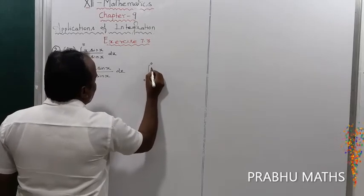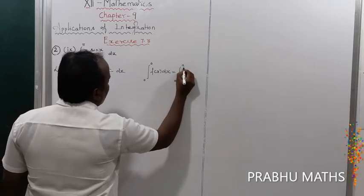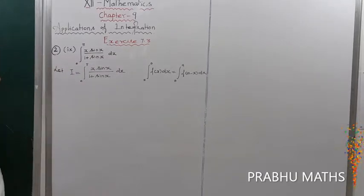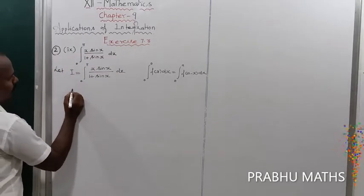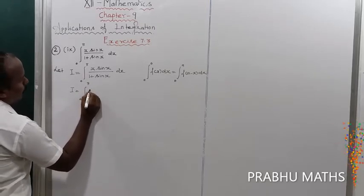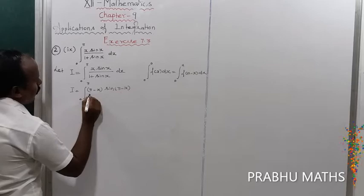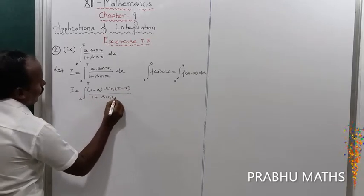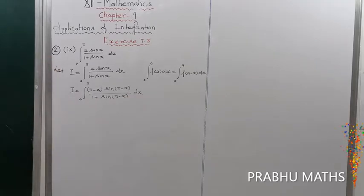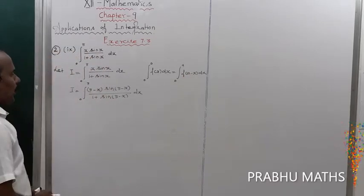The formula states: integral from 0 to a of f(x) dx is equal to integral from 0 to a of f(a minus x) dx. Applying this, I is equal to integral from 0 to π of f(π minus x) dx, where a equals π, so we substitute π minus x.